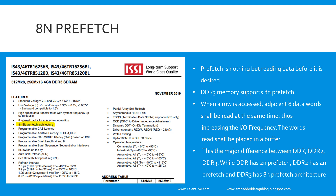Prefetch differs between different DDR generations. Starting from DDR which has a 2n prefetch, DDR2 has a 4n prefetch, and DDR3 has an 8n prefetch. What is meant by 8n is that when we access a row in DDR3 memory, the read access prefetches 8 data words at the same time.